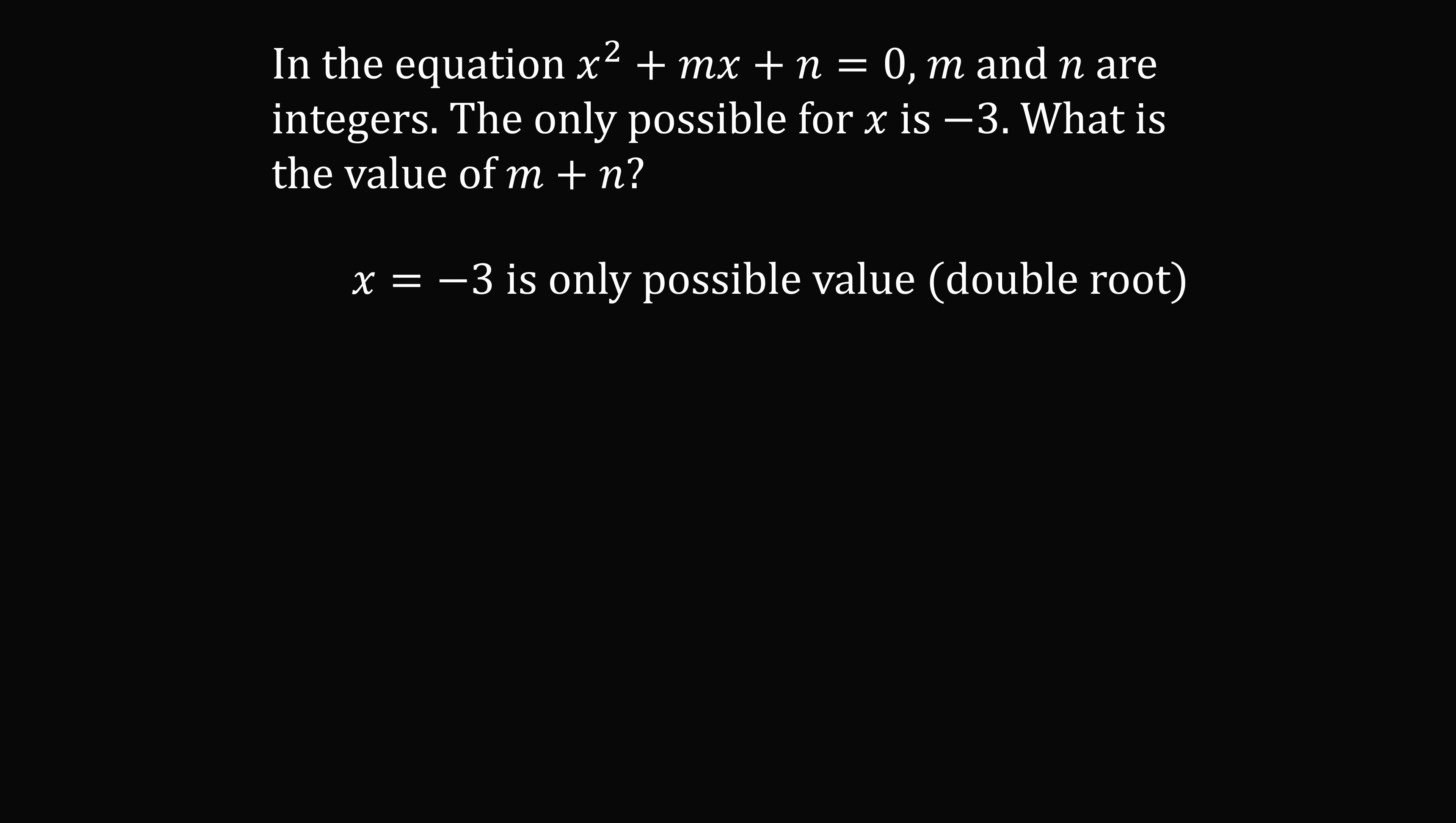Let's get started with problem 1. So we have a quadratic equation where the only possible value for x is negative 3. That means x is equal to negative 3 is a double root. So if x is equal to negative 3 is a double root, the quadratic equation can have two factors where each factor is x minus negative 3. So the quadratic equation is equal to the square of the term x minus negative 3. This simplifies to be the square of x plus 3.